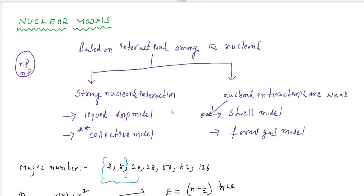Before entering the shell model, we need to discuss one or two points about the liquid drop model. We already know the magic numbers: if the number of protons and neutrons are 2, 8, 20, 28, 50, 82, or 126, the nucleus is very stable. These numbers are called magic numbers. The liquid drop model cannot explain why some nuclei having these proton and neutron numbers are especially stable — this is the major drawback and failure of the liquid drop model.